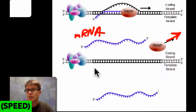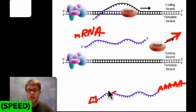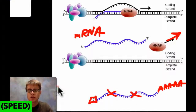In eukaryotes, we're going to do some things to the messenger RNA. We put a 5' cap on one side and a poly-A tail, which is just a bunch of adenines in a row. We also get rid of introns — introns are sections that don't actually code for a gene — and then we splice together the messenger RNA. When we're done with transcription, we have our finished messenger RNA.